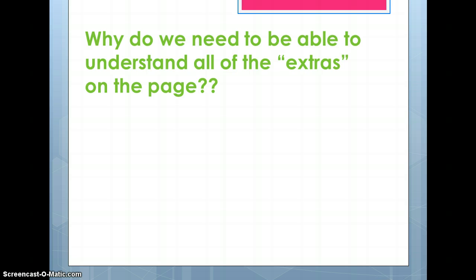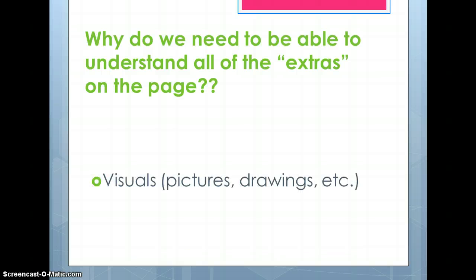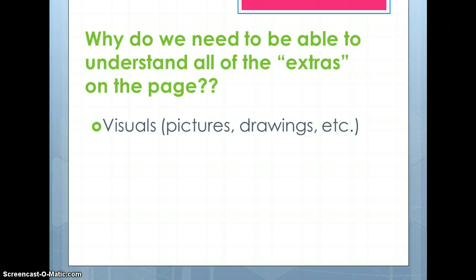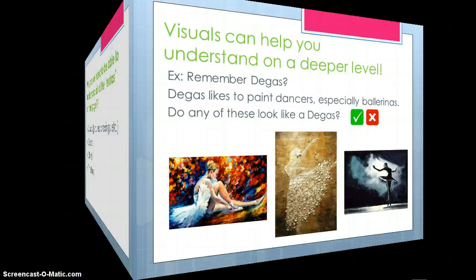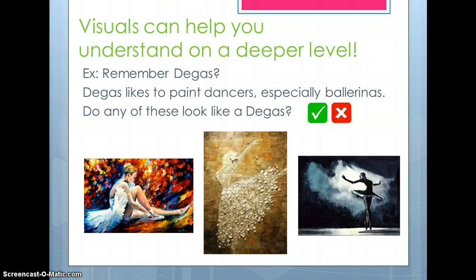Think about the big question here: why do we need to be able to understand all of the extras on the page, and what are some of those extras? Hopefully by the end of class you'll be able to answer that. Here are some of the extras we're going to look at: visuals — which means pictures, drawings, diagrams, etc. — graphs, charts, and timelines. Let's start with visuals.